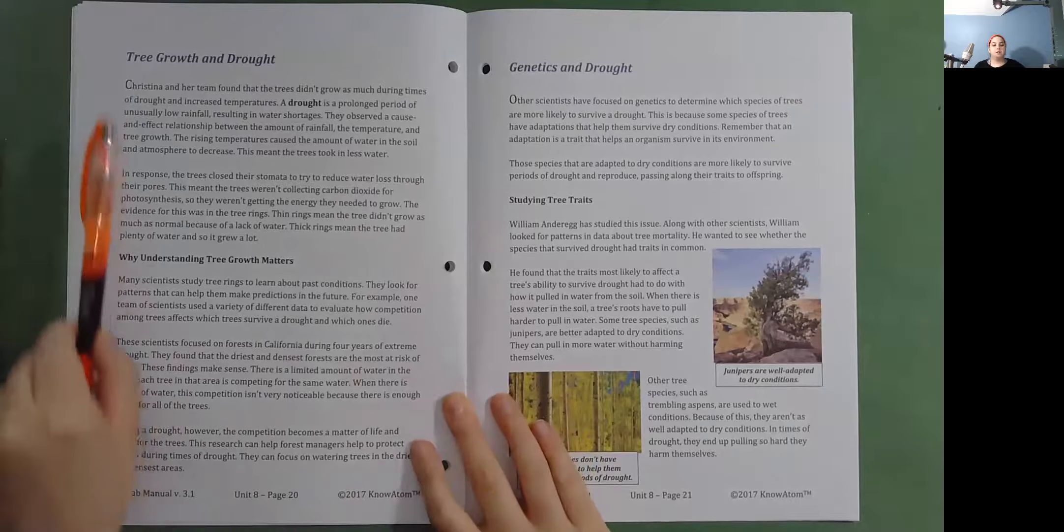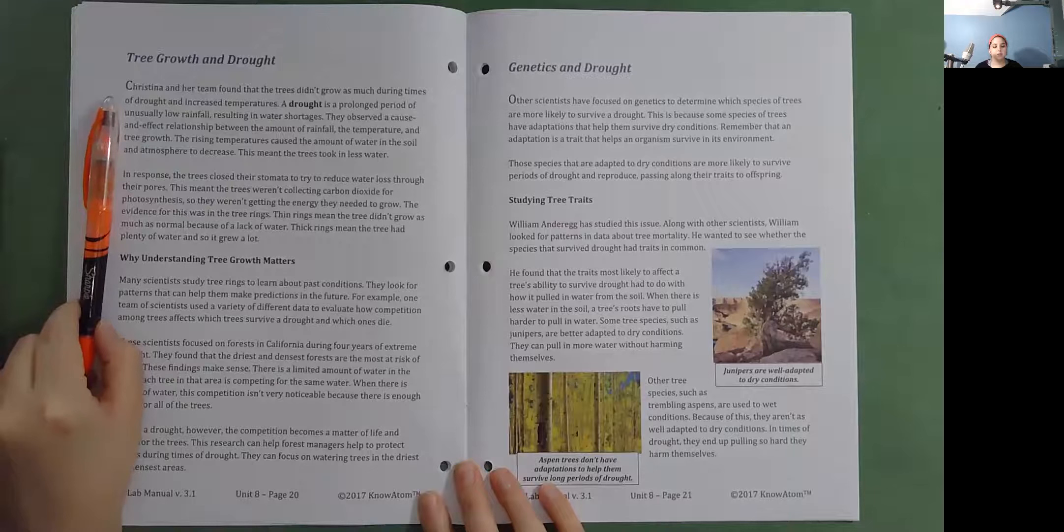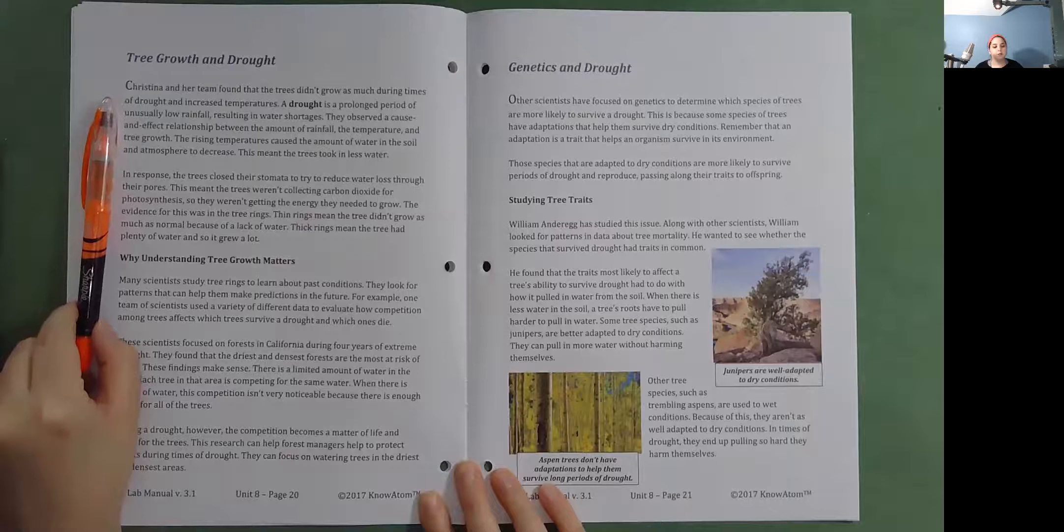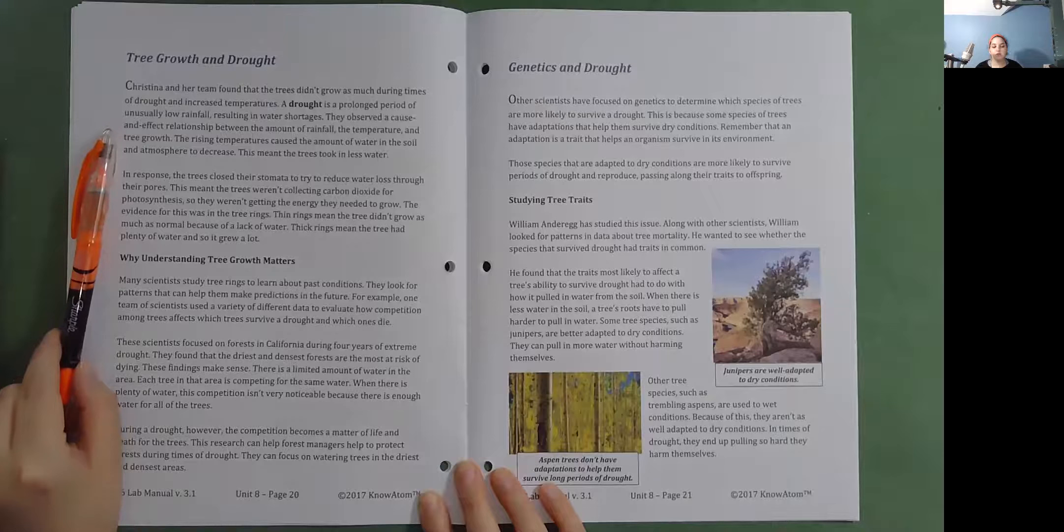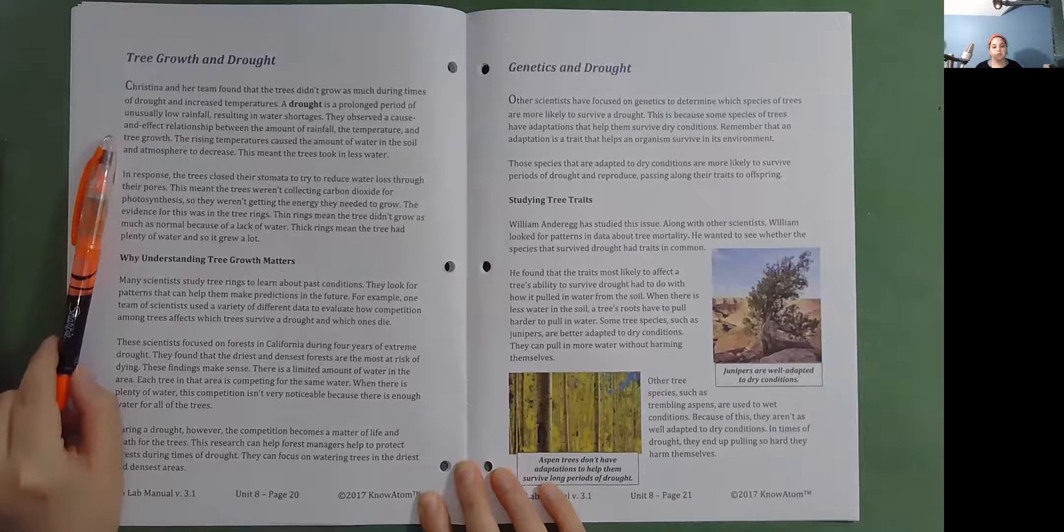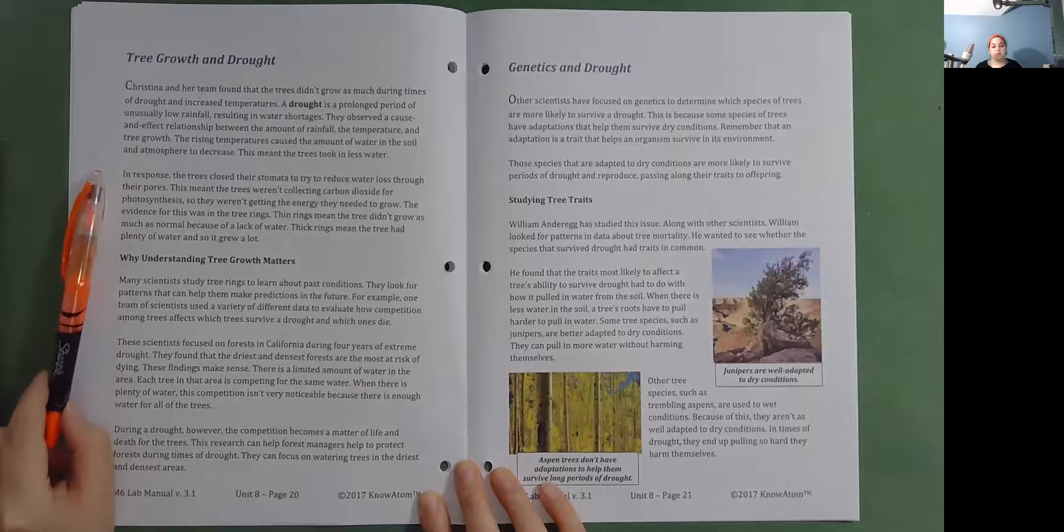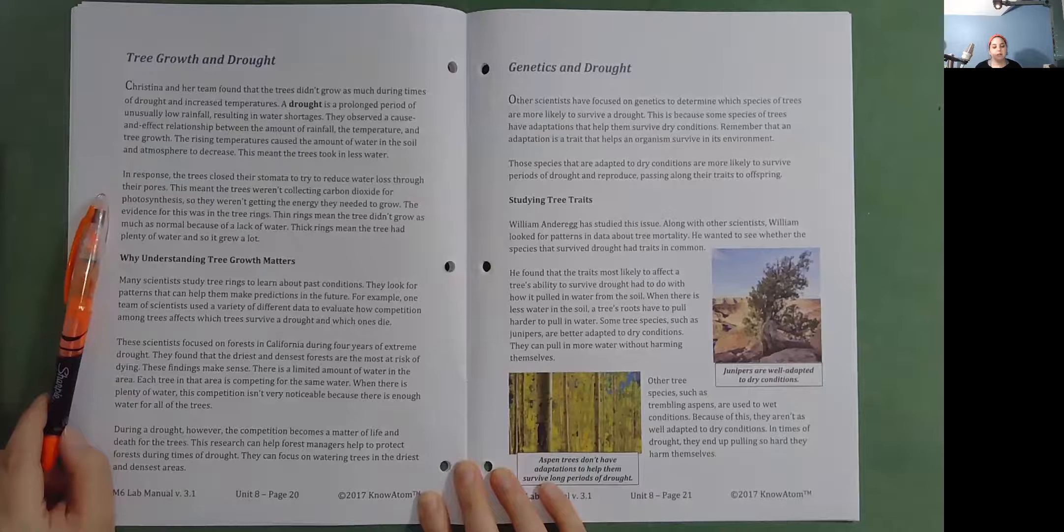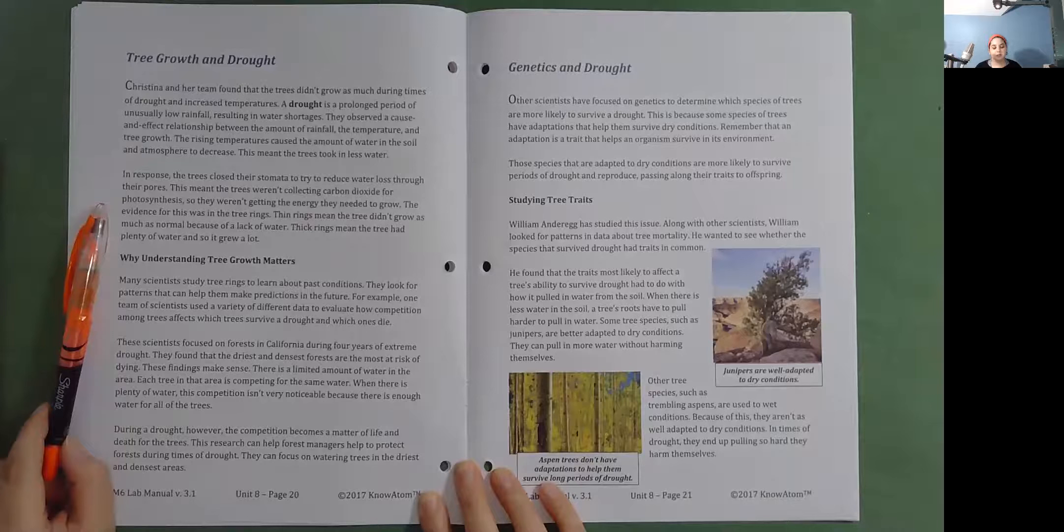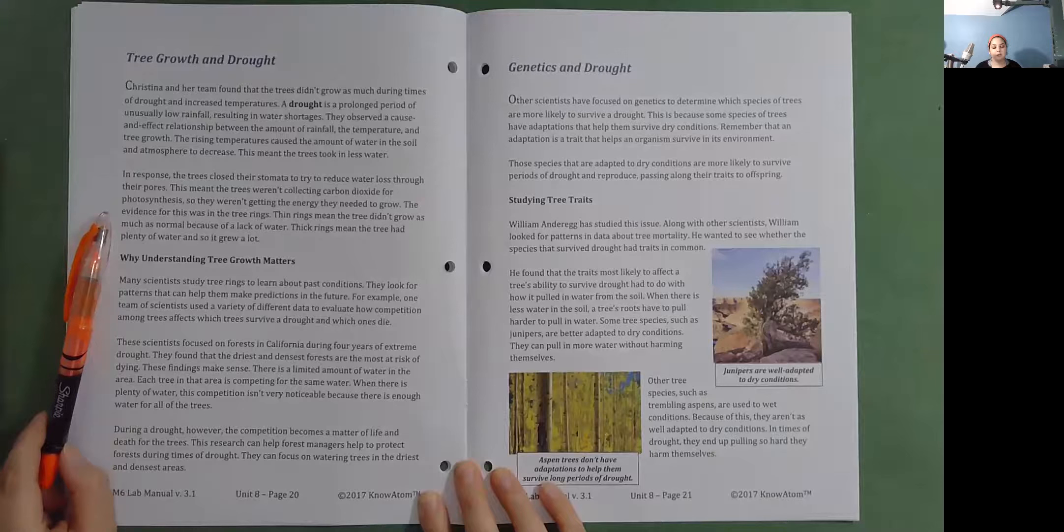Tree growth and drought. Christina and her team found that the trees didn't grow as much during times of drought and increased temperatures. A drought is a prolonged period of unusually low rainfall, resulting in water shortages. They observed a cause and effect relationship between the amount of rainfall, the temperature, and tree growth. The rising temperatures caused the amount of water in the soil and atmosphere to decrease. This meant the trees took in less water. In response, the trees closed their stomata to try to reduce water loss through their pores. This meant the trees weren't collecting carbon dioxide for photosynthesis, so they weren't getting the energy they needed to grow. The evidence for this was in the tree rings. Thin rings mean the tree didn't grow as much as normal because of a lack of water. Thick rings mean the tree had plenty of water and so it grew a lot.